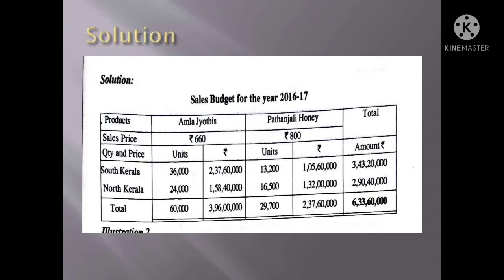The price is Rs. 600 per kg. With a 10% increase, the new price is calculated. In South Kerala, there are 30,000 units. With 20% increase, that is 30,000 multiplied by 20 divided by 100 which gives 6,000 additional units, making it 36,000. Total comes to 36,000 plus additional units.